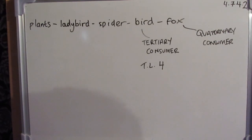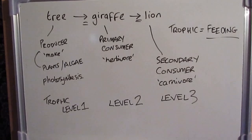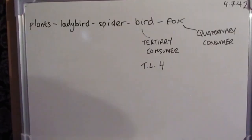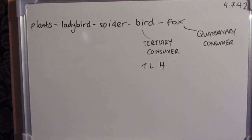The tertiary consumer — the birds — would be trophic level four. The fox would be considered a quaternary consumer. Going back to the tree, giraffe, and lion example: because there is no organism that eats the lion, no predators exist for it, we can classify the lion as an apex predator — top of its food chain.